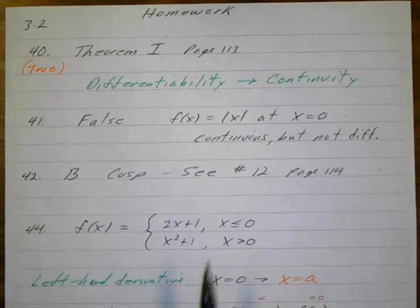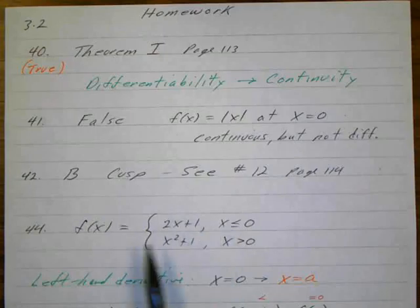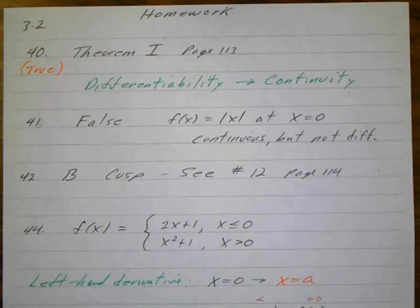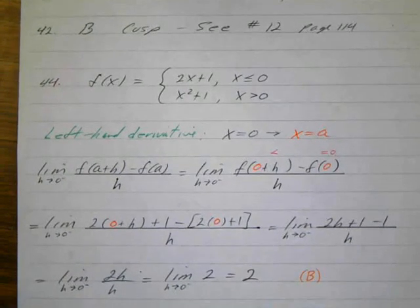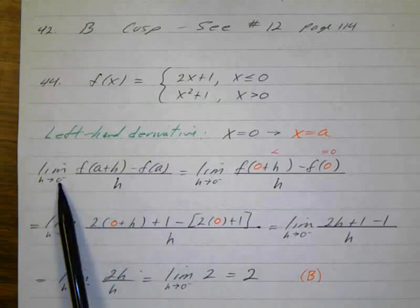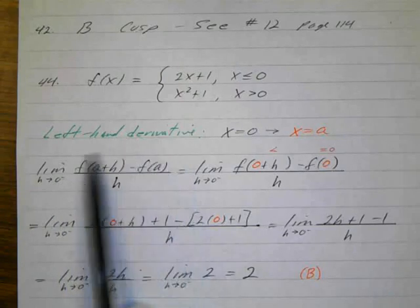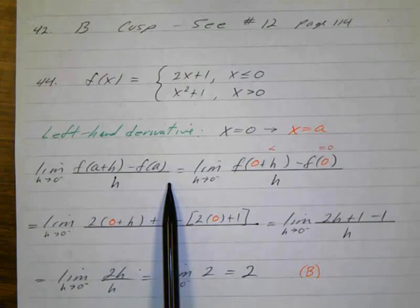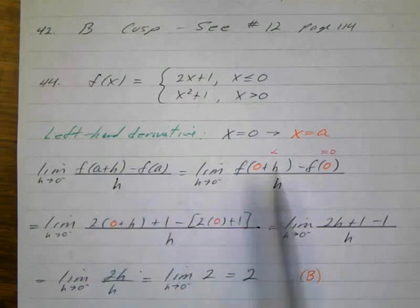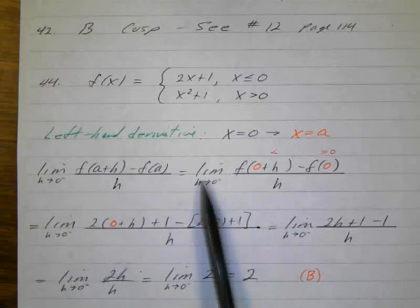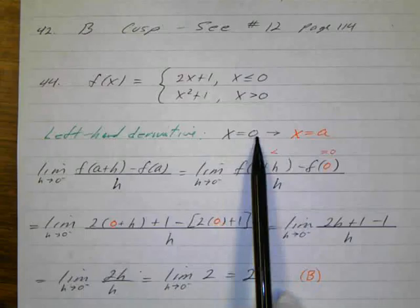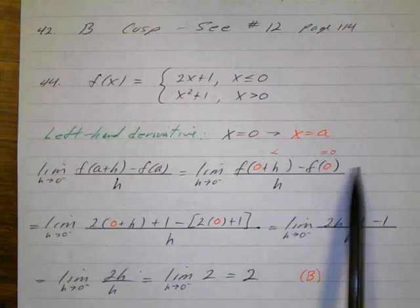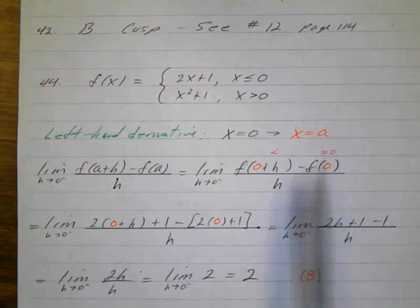Okay, numbers 44 and 45 are dealing with this piecewise function, and they just want you to find the left-hand derivative and the right-hand derivative. So the left-hand derivative, that's equal to the limit as h approaches 0. We've done our left-hand derivatives. And that's going to be f of 0 plus h, because this is at 0. So my a will be 0 minus f of 0 over h.